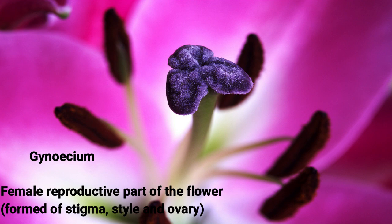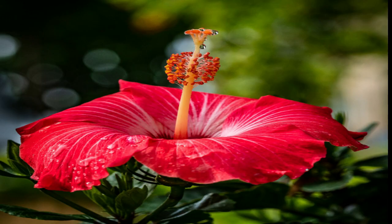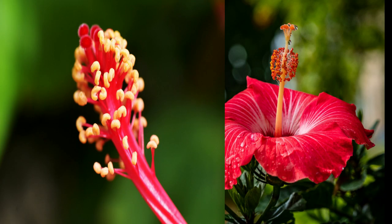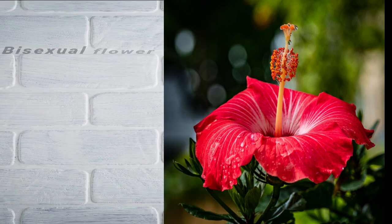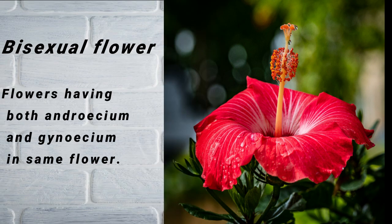From there on, you can get to the class. This is a brief picture of a hibiscus, which has all its whorls and both androecium and gynoecium. See — that is the androecium and gynoecium having the style, the anther, and everything. So it is a bisexual flower, meaning the flower has both androecium and gynoecium in the same flower — just look at the picture.